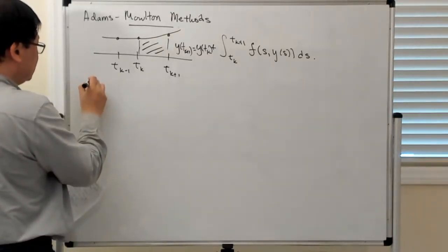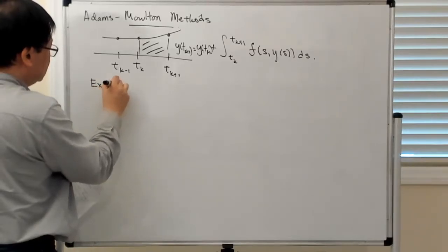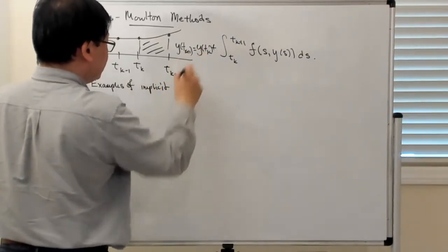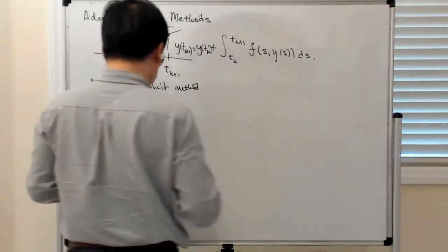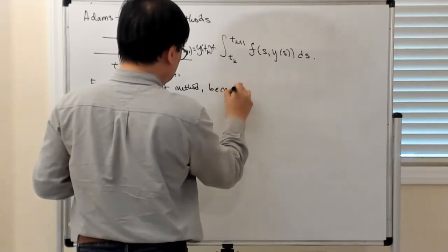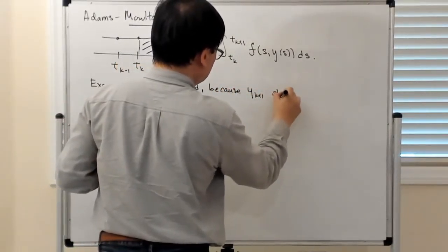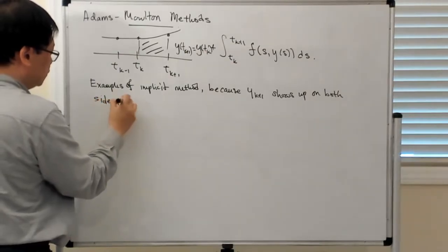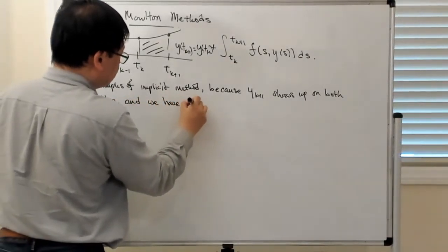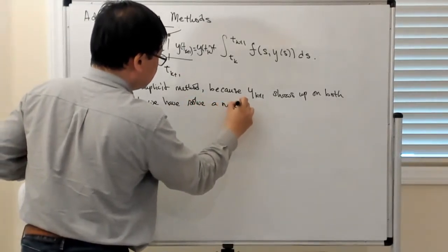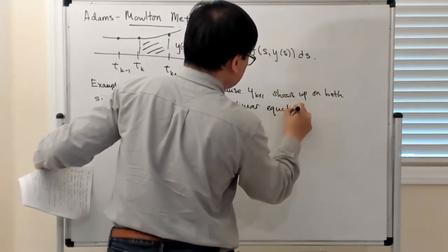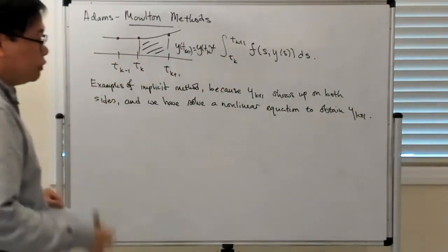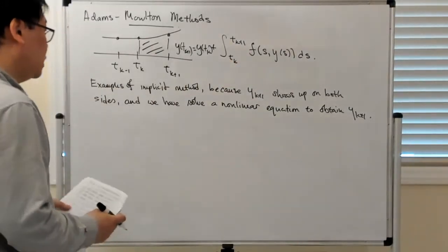These are examples of implicit methods, because what will happen is that the new solution will show up both on the left and right-hand side, so you have to solve some sort of nonlinear equation to obtain yk+1. In general, you have to solve a nonlinear equation — it depends on the form of the vector field whether or not the equation is nonlinear.